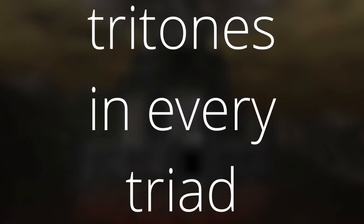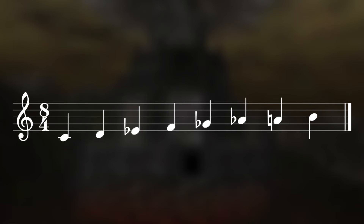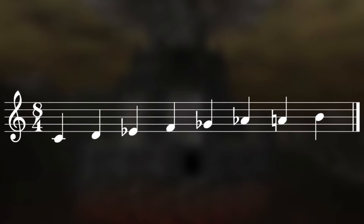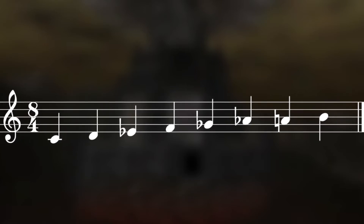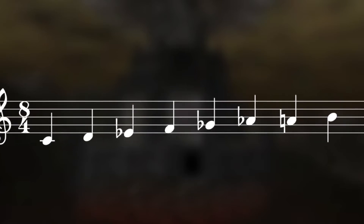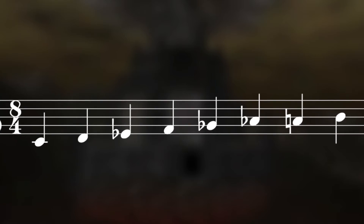This brings me to the second point. Every triad built within the diminished scale — proper triads, the root, two diatonic pitches above that, and another two diatonic pitches above that — contains the tritone. It's a fair argument to say that it's truly impossible to resolve tension in the diminished scale. Everywhere you go, the tritone is waiting.